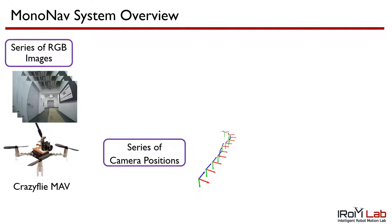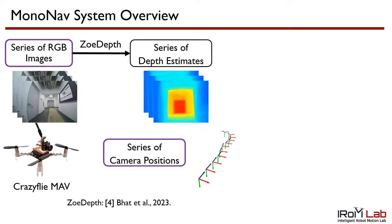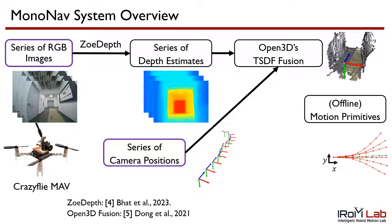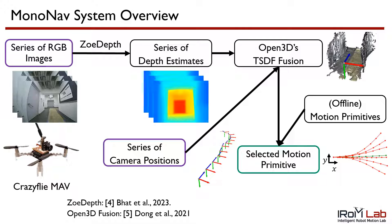MonoNav starts with a series of monocular images and camera poses which are readily available to the MAV. We use ZoeDepth, a pre-trained network, to perform per-frame metric depth estimation. Next, we integrate the depth estimates and poses into a 3D reconstruction using Open3D. For planning, we consider a library of motion primitives generated offline. Using the 3D reconstruction, we select a collision-free motion primitive.